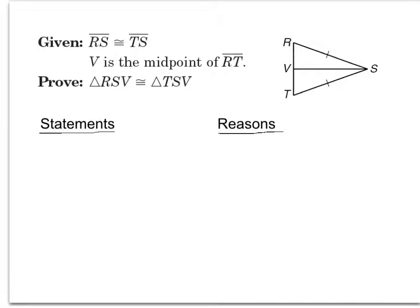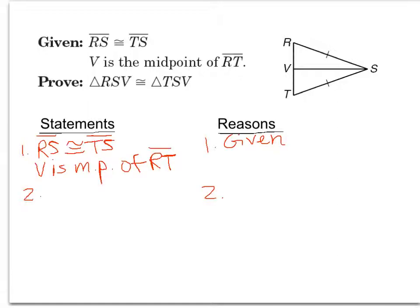Here's a pretty basic triangle proof. We're given that side RS is congruent to side TS — already marked on the picture — and that V is the midpoint of RT. We're trying to prove that these two triangles are congruent. The very first statement and reason is going to be the given. Since we only have one side the same between them, we need to do a little more work to get one of the postulates that shows the triangles are congruent.